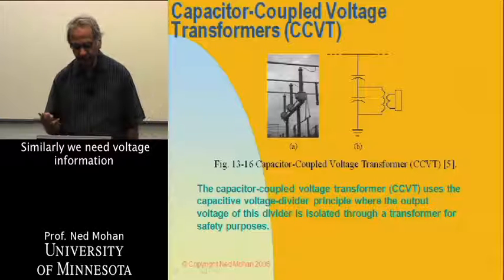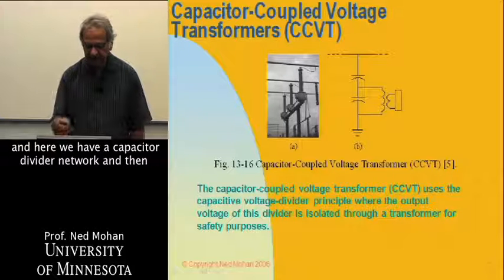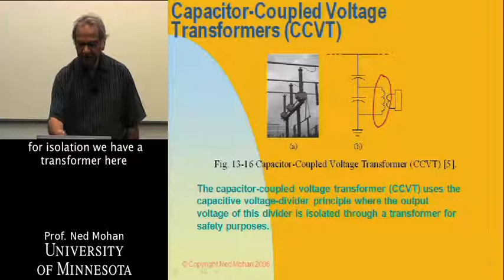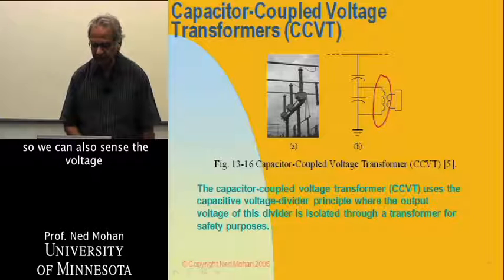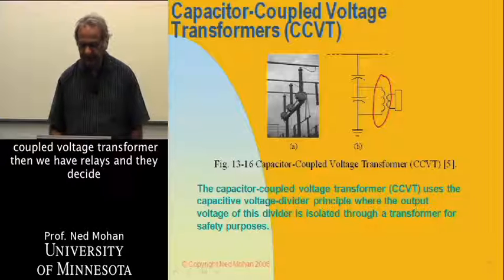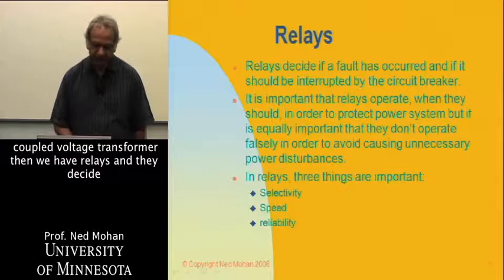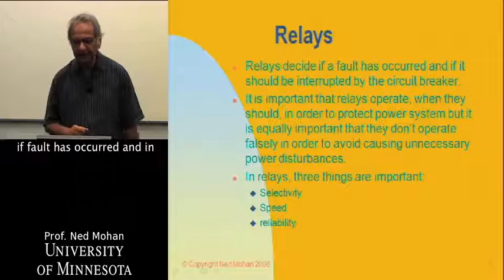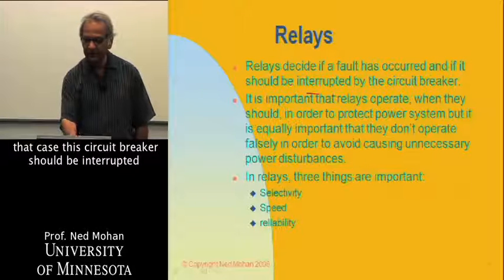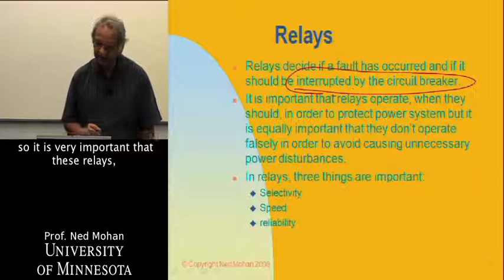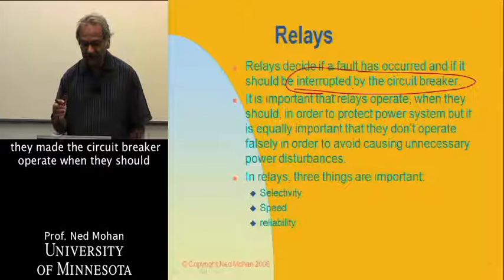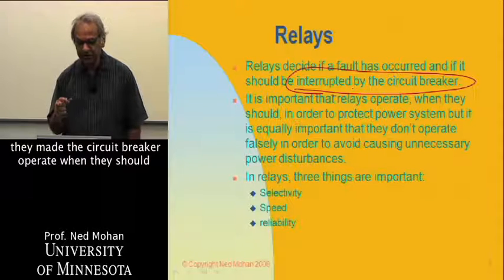Similarly, we need voltage information. Here we have a capacitor-divided network, and then for isolation, we have a transformer. So we can sense the voltage of the transmission line using a so-called capacitor-coupled voltage transformer. Then we have relays, and they decide if a fault has occurred. In that case, this circuit breaker should be interrupted. It is very important that these relays make the circuit breaker operate when they should, in order to protect the power system.